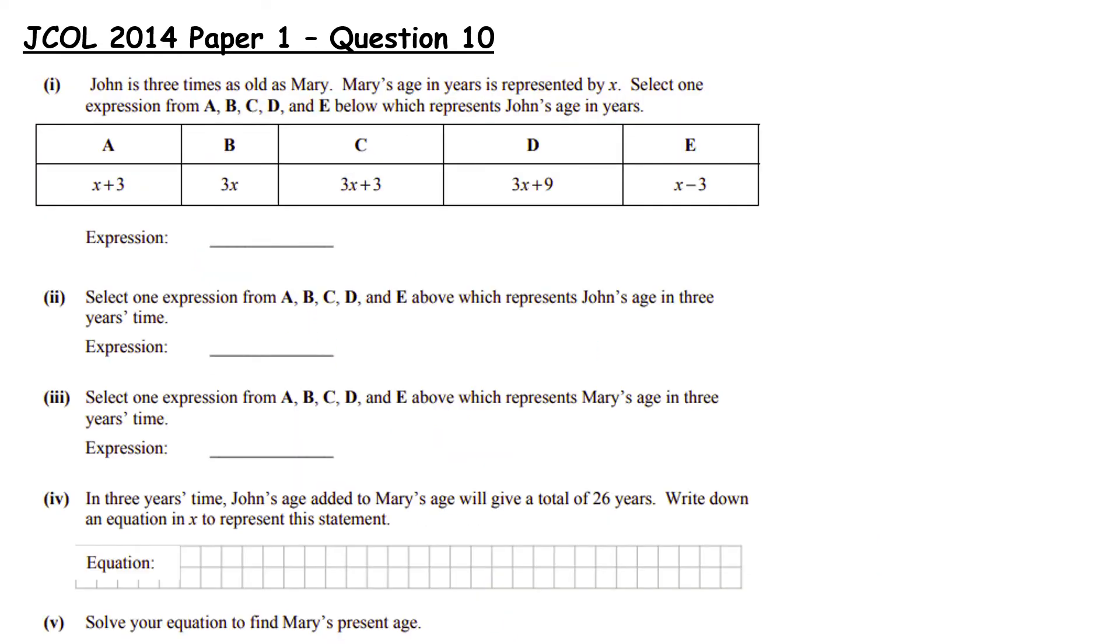This is a junior certificate ordinary level question from the 2014 paper. John is 3 times as old as Mary. Remember the word times means multiply. Mary's age in years is represented by x. So in this particular question they've given us the letter to use. So that is Mary's age. Select one expression from A, B, C and D which represents John's age. So we have Mary's age which is x and John is 3 times as old as Mary. So 3 times x which is 3 multiplied by x and the best description of that that we have is B, 3x. 3 times x.